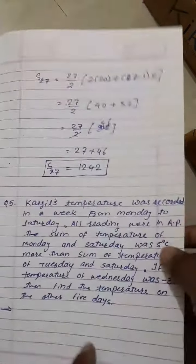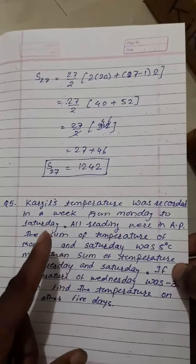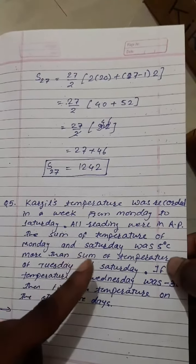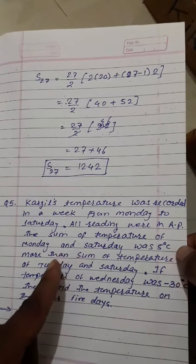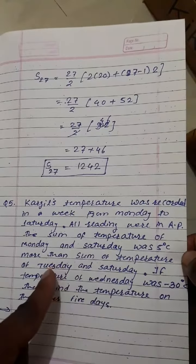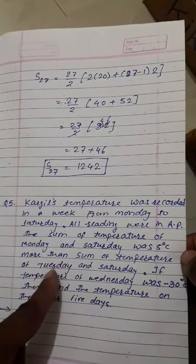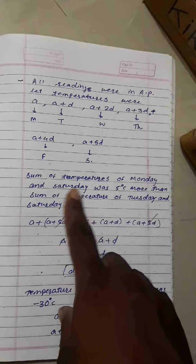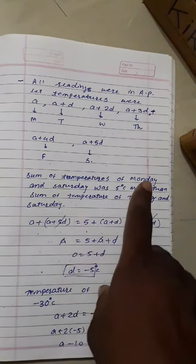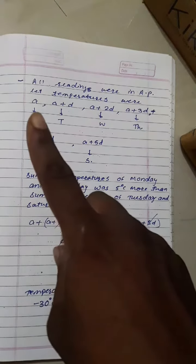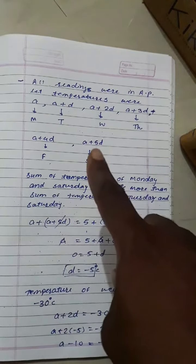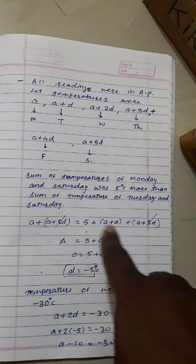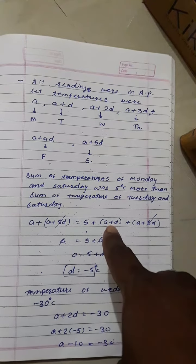Now the condition is: the sum of the temperature of Monday and Saturday was 5 degrees Celsius more than the sum of the temperature of Tuesday and Saturday. What is the sum of Monday and Saturday? Monday is A, Saturday is A plus 5D.